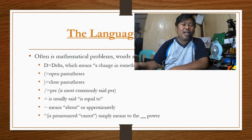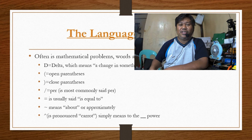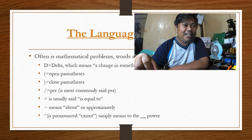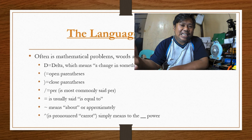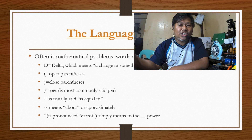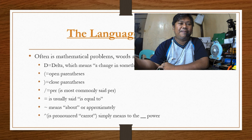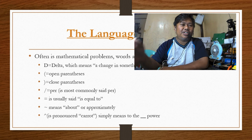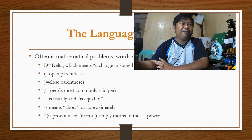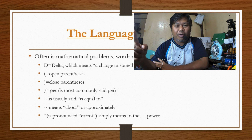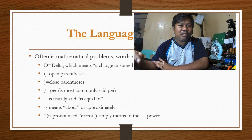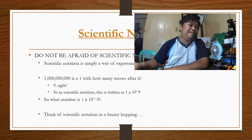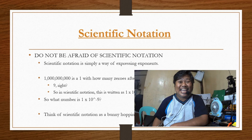The language of math also involves many symbols used often in mathematical problems. We have delta, which means change in something. We have open and close parentheses, the division symbol, the equal sign which means equal to, the approximate symbol, and the caret which means to the base power.